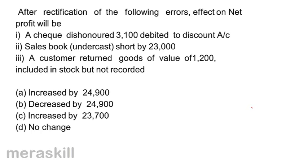After rectification, what would be the effect on profit? A check was dishonored and was wrongly debited to discount account. So profit will go up by 3,100 because I will remove it from the discount — debit to an expense account means profit will go up.